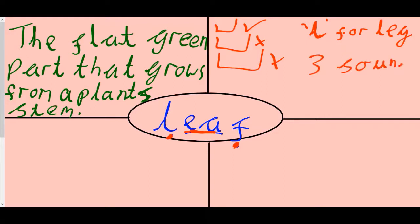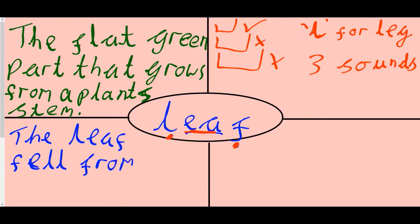Now, down at the bottom, let's put this word into a sentence. Leaf. Think about a sentence that could have leaf in it. The... Leaf... Fell. Where could it fall from? The leaf fell from... Make the H look nice. The leaf fell from the tree. Full stop.